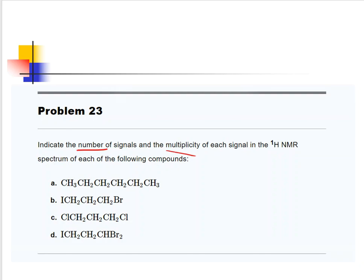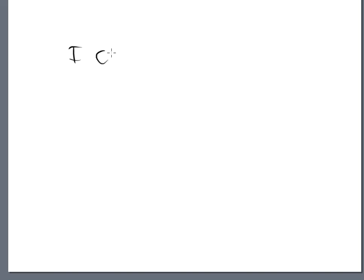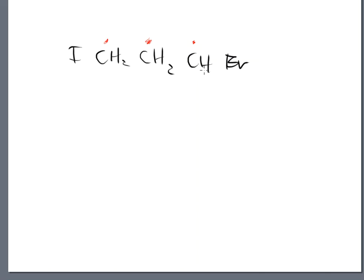Finally we get to D: I-CH2-CH2-CH-Br2. Again, start off with the number of chemical shifts. Each carbon is different — ding-dong, I get a signal; ding-dong, I get another signal; ding-dong, another one too. This is very similar to Part B with the exception of the last carbon near the bromine, which only has one hydrogen, not two. So there are two bromines with one hydrogen on that carbon, and we're going to have three chemical shifts total.